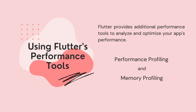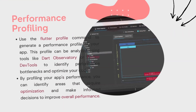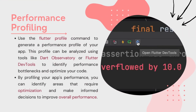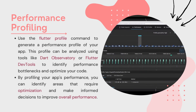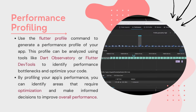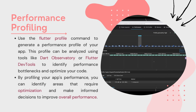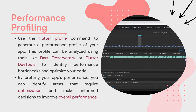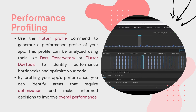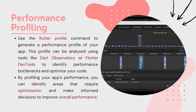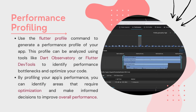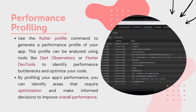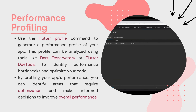Flutter provides additional performance tools to analyze and optimize your app's performance. Performance Profiling: use the Flutter Profile command to generate a performance profile of your app. This profile can be analyzed using tools like Dart Observatory or Flutter DevTools to identify performance bottlenecks and optimize your code. By profiling your app's performance, you can identify areas that require optimization and make informed decisions to improve overall performance.